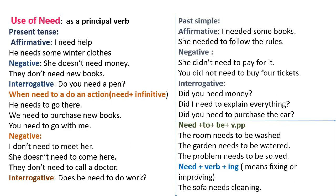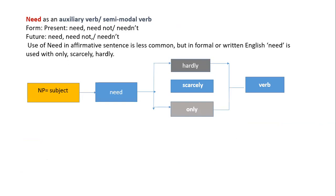Now we look at 'need' as a semi-modal auxiliary verb, which is less common. The use of 'need' in affirmative sentences is uncommon. Native speakers in informal speech say 'I need to buy a new shirt', but it is less common. The negative sentence is more common. In formal or written English, 'need' is used with words like 'only', 'scarcely', or 'hardly' — where the noun runs as subject and 'need' is followed by scarcely, only, or hardly, then the verb.